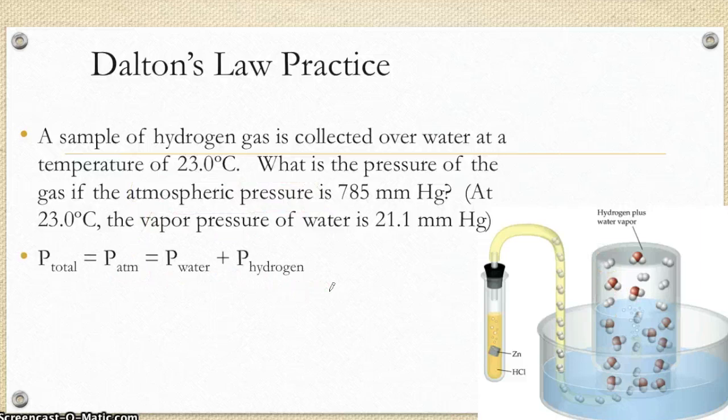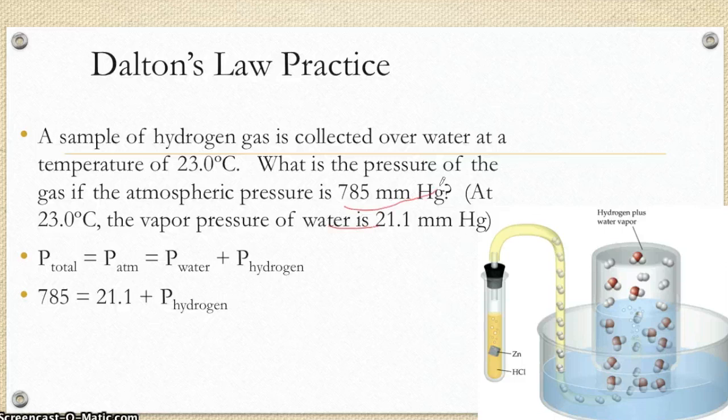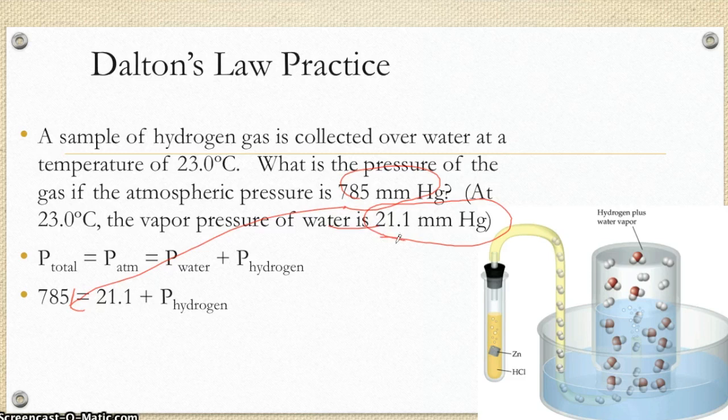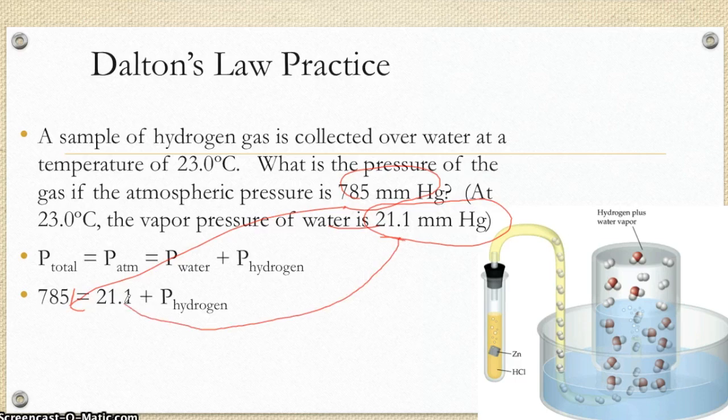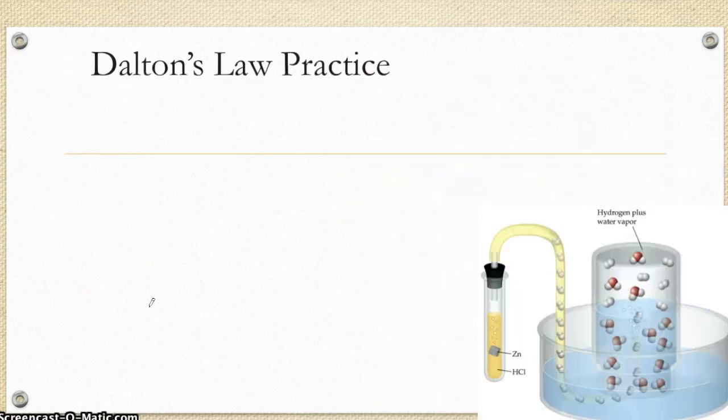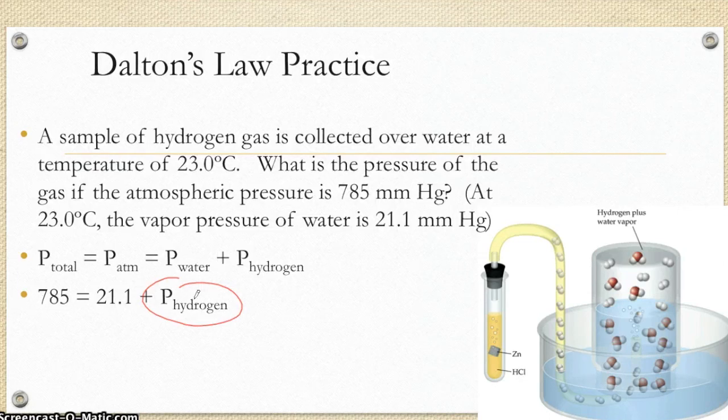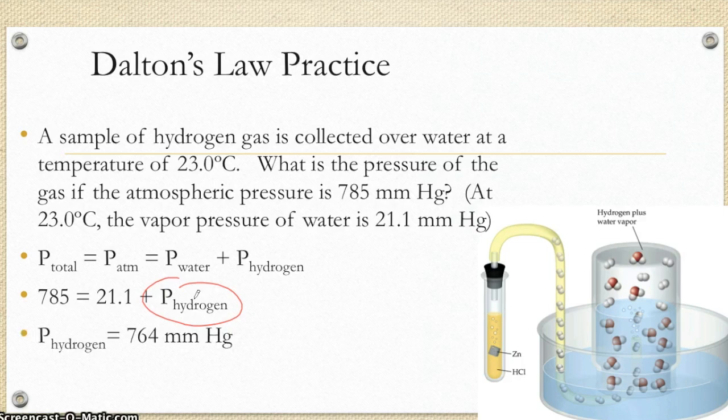So here's the way a setup would look like. I gave you the total atmospheric pressure of 785 millimeters of mercury. So that went here. You would have to be told the vapor pressure for water. It's dependent on temperature. So the hotter the water is, the more it evaporates. And at this temperature, the pressure for water is 21.1 millimeters of mercury. And then all I have to do is solve for that missing pressure. Very easy algebra, 785 minus 21.1 would give me the pressure coming from just the hydrogen of 764 millimeters of mercury.